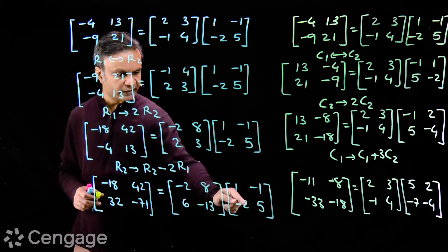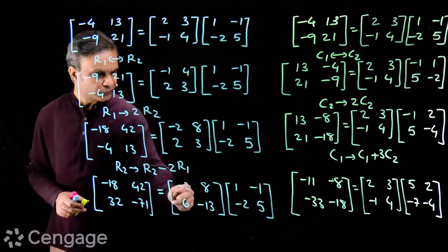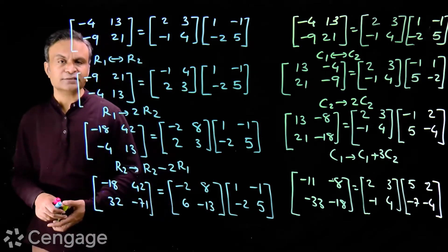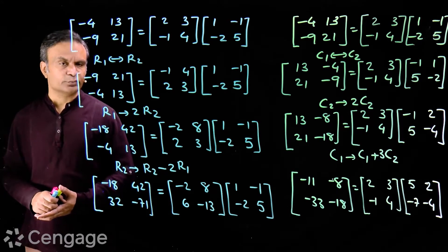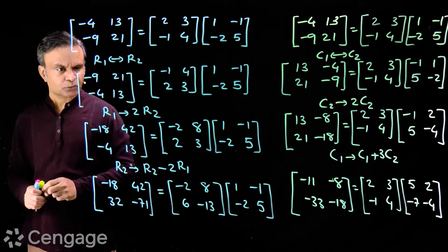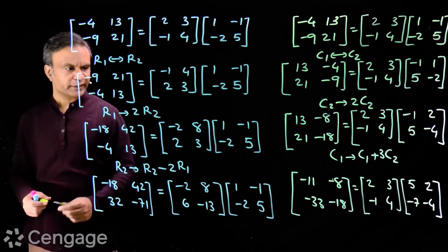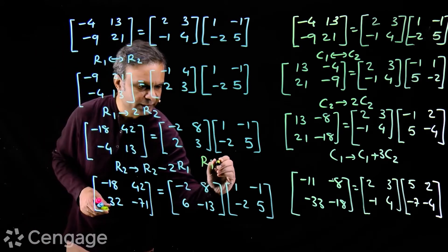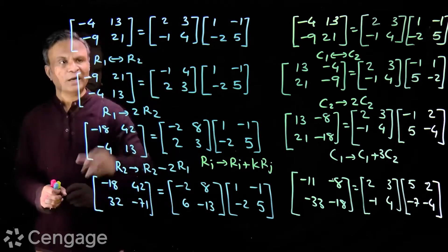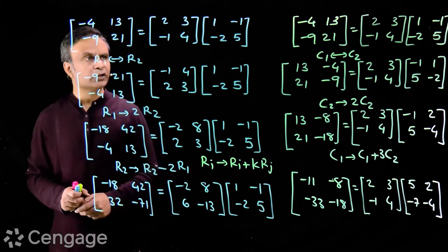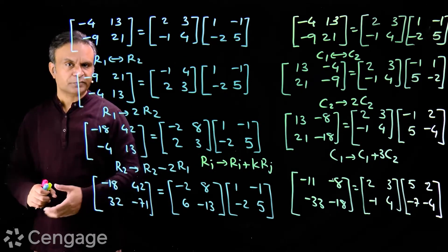The product of these two matrices is: -2, -16, -18, 2 + 40 = 42, 6 + 26 = 32, -6 - 65 = -71. So we have here 3 elementary row transformation types: interchange of rows, multiplying any row with some constant, and the operation Ri → Ri + k*Rj. After all these row transformations, the product of the RHS matrices is equal to the LHS matrix.